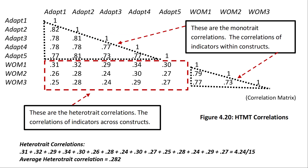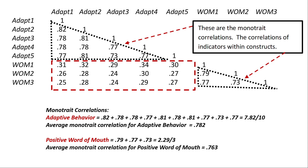To find the heterotrait correlation between adaptive behavior and word of mouth, I take all the correlations in the red box and average them, giving an average heterotrait correlation of 0.282. Then for the monotrait correlations, I take positive word of mouth — correlations 0.79, 0.77, 0.73 — and average them. I do the same for adaptive behavior. Now I can plug them into the formula.